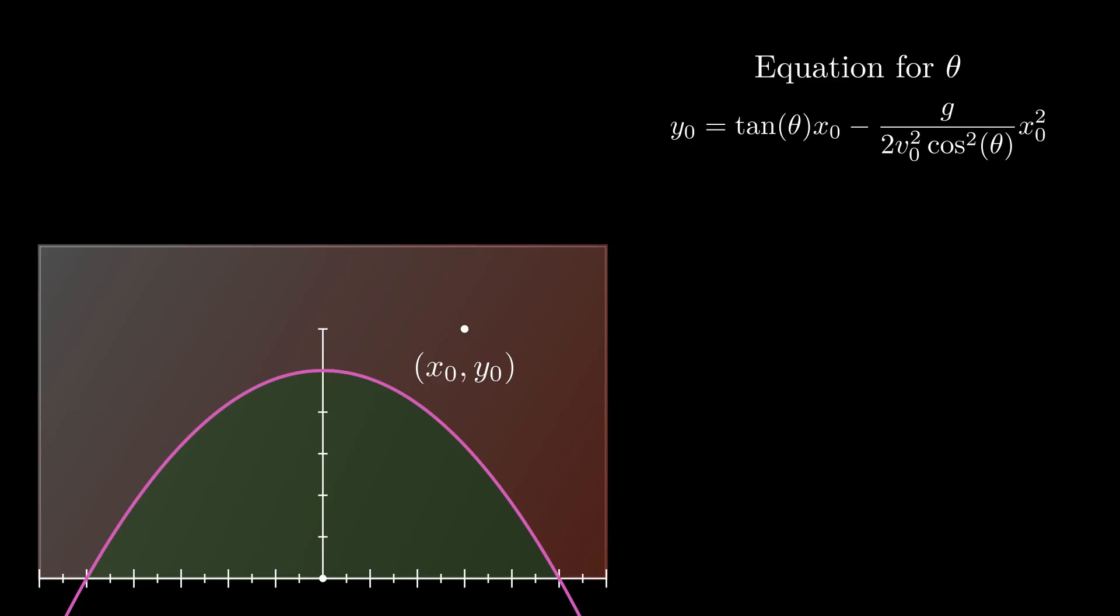It all comes down, then, to solving this equation for theta and seeing how many solutions we obtain. But since theta doesn't appear by itself, but instead inside of trig functions, what we're really going to solve for is for theta's trig functions, and then we're going to take an arc tangent or an arc cosine to obtain theta itself. Here, then, we have to make a choice.